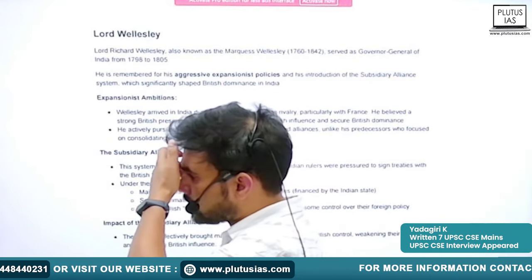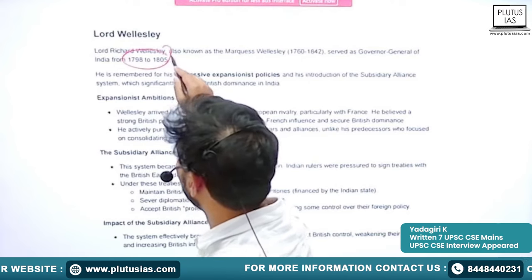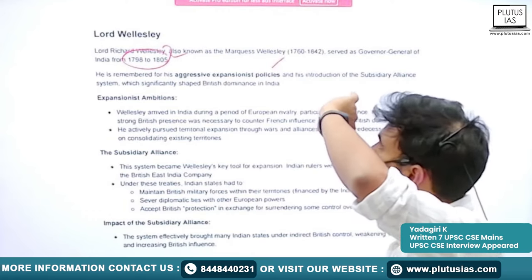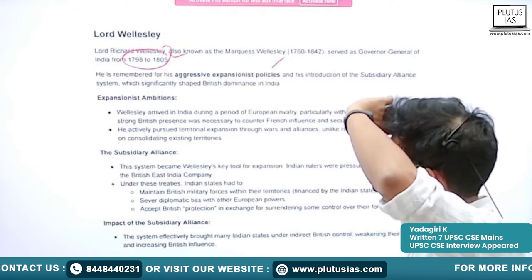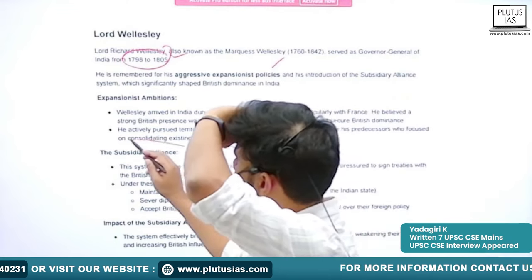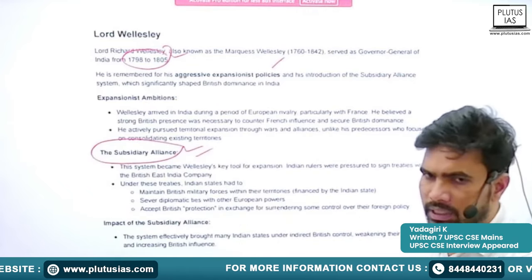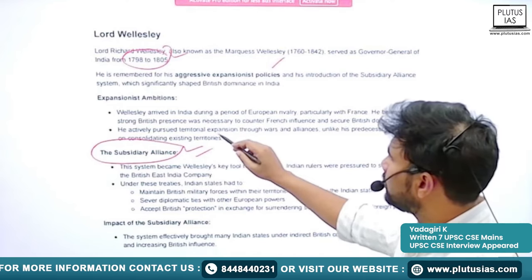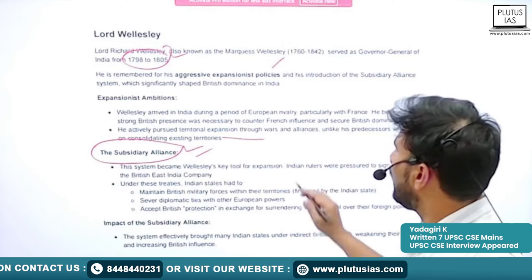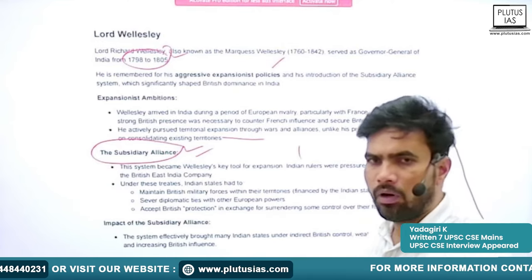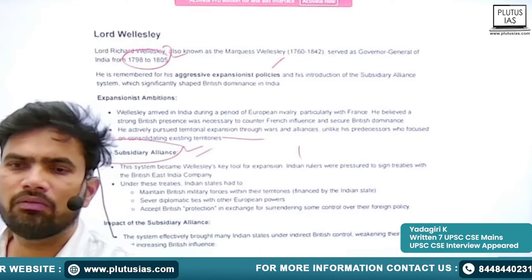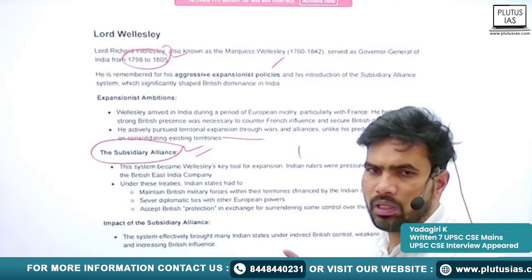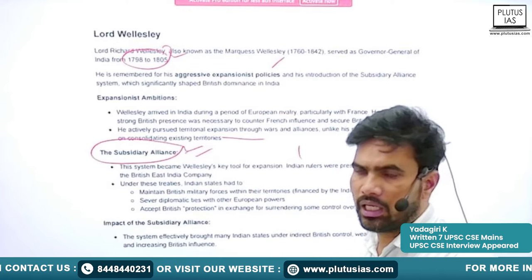Lord Wellesley was the next prominent Governor General of Bengal, between 1798 to 1805. He is known for his aggressive expansionist policies and is very well known for the introduction of the Subsidiary Alliance System. He actively pursued territorial expansion — by war or by alliance — wanting to gain control over Indian territories. With that ambition he brought in the Subsidiary Alliance System.